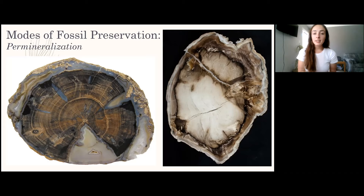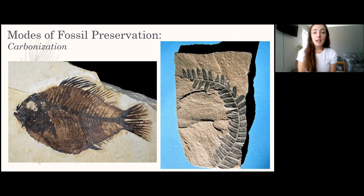Permineralization: anything porous, like wood or bones, can be subjected to this. Water flows through it, rich in some soluble mineral that precipitates out in those pores, solidifying the porous material. Carbonization is most common in plants and fish that get buried very quickly; their carbon-rich makeup becomes a thin film of a fossil between layers of sediment.